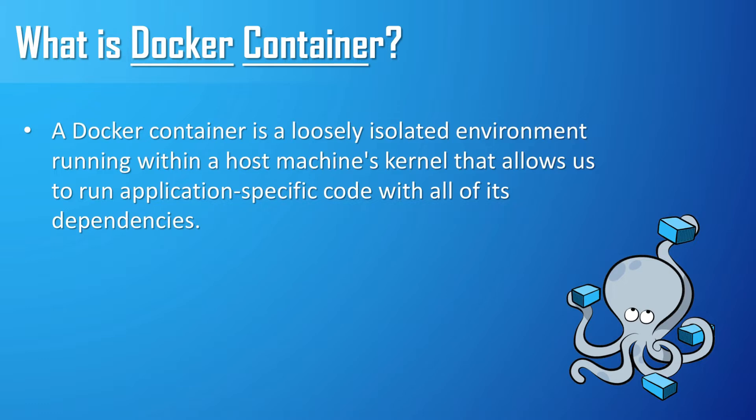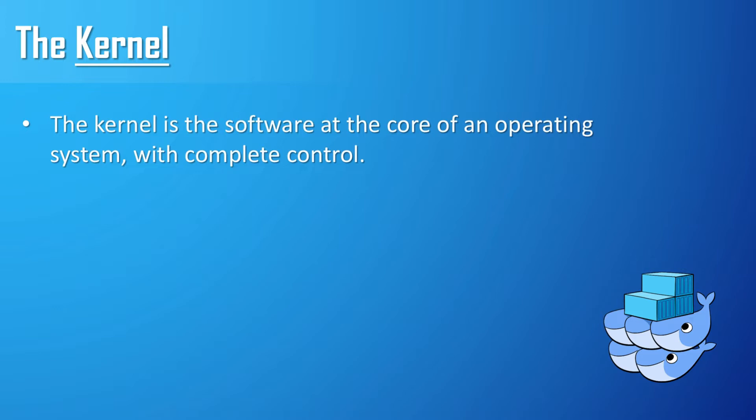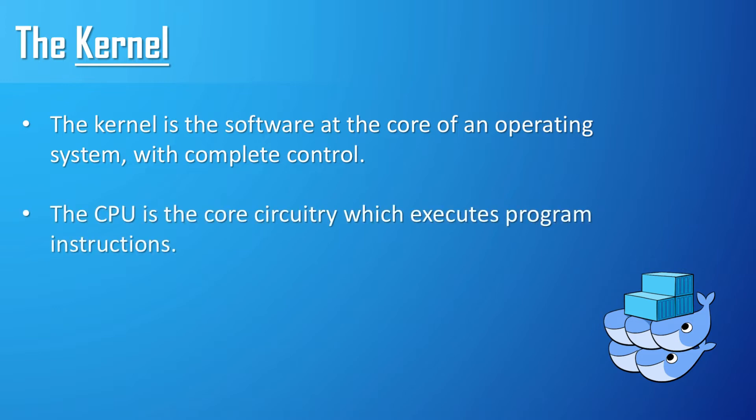Now that we have our definition of a Docker container, let's dive into some of the concepts that the definition brings up. Let's discuss how Docker relates to a kernel by answering first: what is a kernel? In operating systems like Mac OS, Windows, or Linux, the kernel is a software at the core of the machine with complete control over the entire system. It handles reading input and output from various software applications, and also turning that data into instructions for the CPU to execute. This core software also handles things like memory and devices like keyboards, monitors, and speakers for the entire operating system.